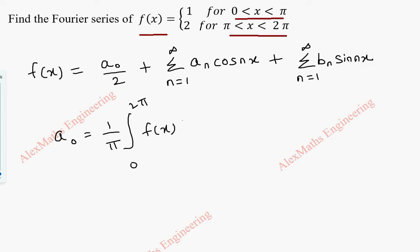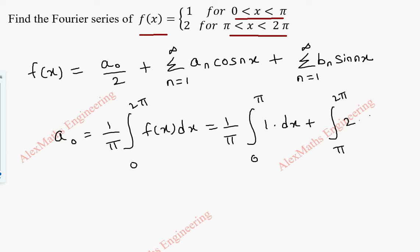To find a₀, we use the formula: a₀ = (1/π) integral from 0 to 2π of f(x) dx. Since the function is defined in two parts, we split the integral into 0 to π with function value 1, and π to 2π with function value 2, keeping the (1/π) factor common.